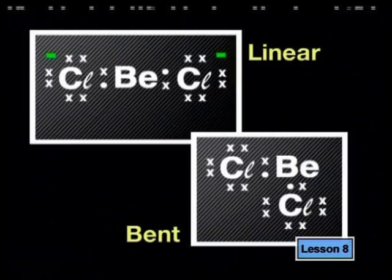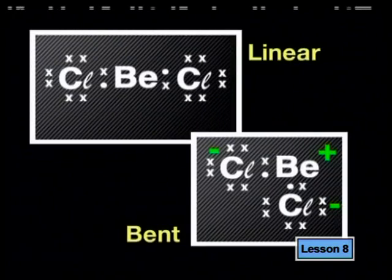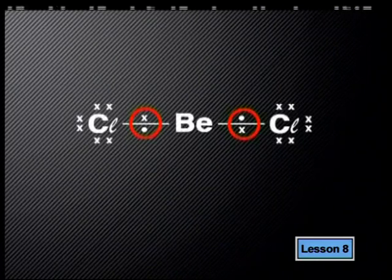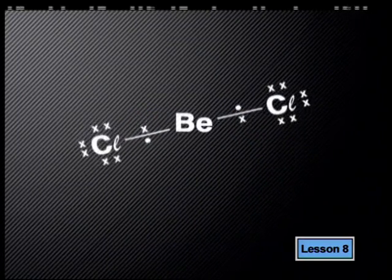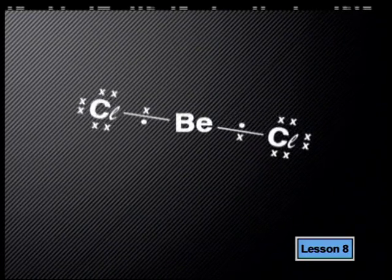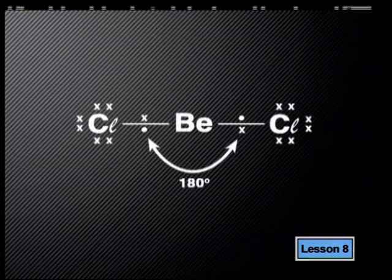If the shape is linear, the molecule will not have two distinctly charged opposite ends. But if the shape is bent, the chlorine end would be negative and the beryllium end would be positively charged — in that case, the molecule would be a dipole. We cannot say for certain what the shape is without applying the VSEPR model. In the beryllium chloride molecule, we have only two bonding pairs of electrons. These negatively charged electron clouds will try to move as far away from each other as possible, so the VSEPR model predicts that the chlorine and beryllium atoms will line up in a straight line.